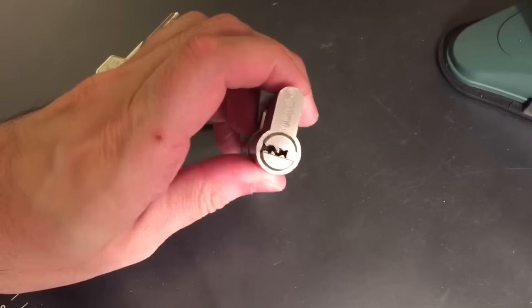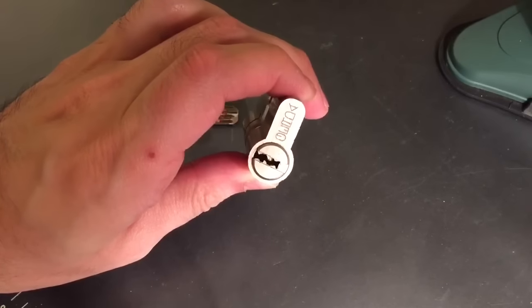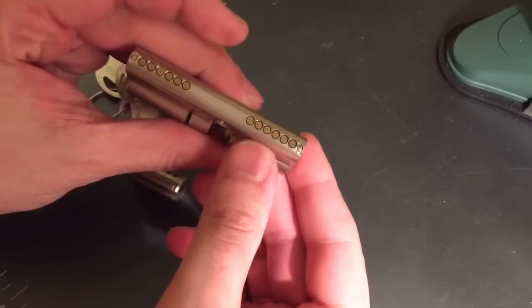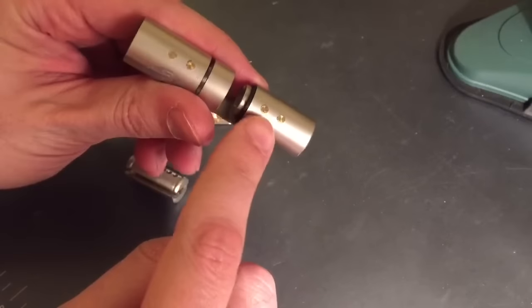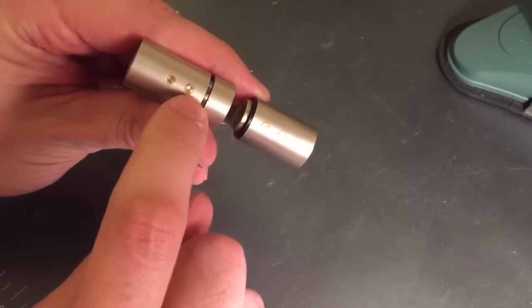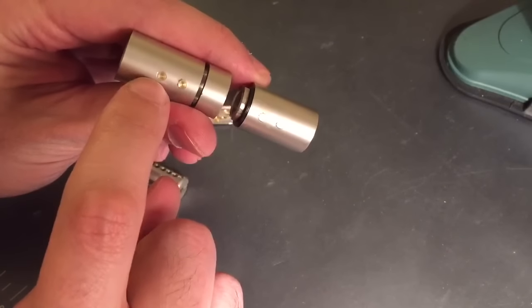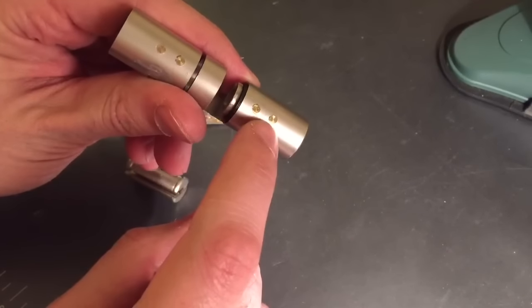It is a dimple lock, but it has a little bit of twist to it. In addition to the normal six active pins, you can see on the bottom there are these two little spots where the lock housing has been drilled out and little brass plugs have been inserted.